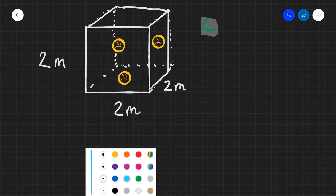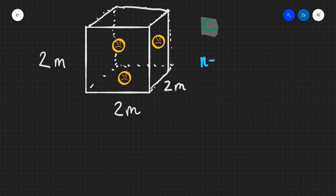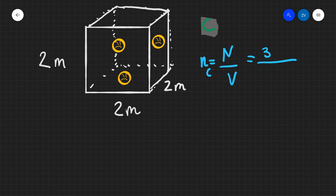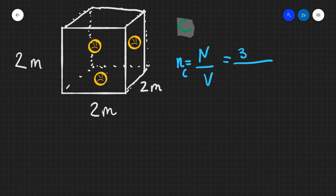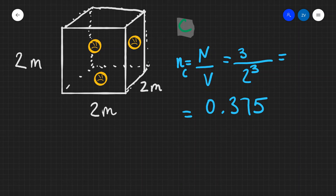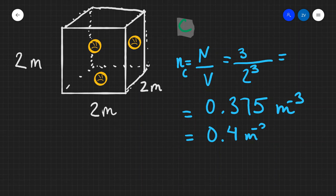For the final case, the volume is a little bit different. As we can see, each of those sides is two meters, and we have three charge carriers. Applying the formula: n_c equals the number of charge carriers divided by the volume. There are three charge carriers, and the volume is two times two times two, which is two cubed. Dividing those two numbers gives us 0.375, which we can round to 0.4 m to the power of minus three.